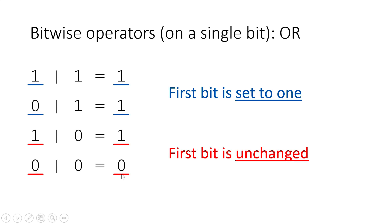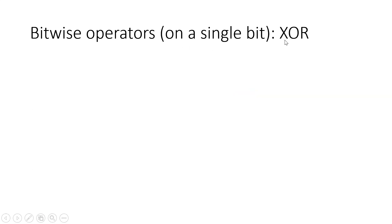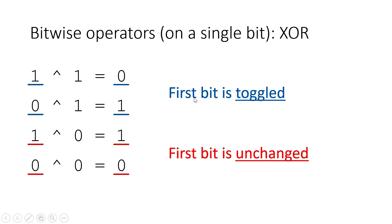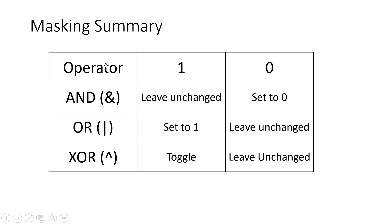You can also use the exclusive OR operator, which is similar to OR but is only true when exactly one of your inputs is one — not when both are one. When you XOR a bit with one, the bit is toggled: one becomes zero, and zero becomes one. When you XOR with zero, the bit is unchanged. In summary: ANDing with one leaves a bit unchanged; ANDing with zero sets it to zero. ORing with one sets a bit to one; ORing with zero leaves it unchanged. XORing with one toggles a bit; XORing with zero leaves it unchanged.